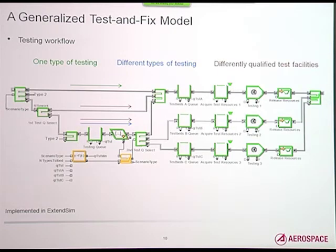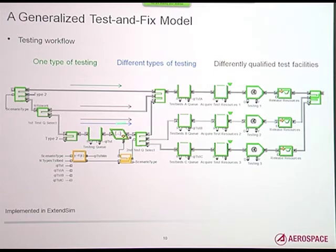This is an excerpt from the model, implemented in a tool called ExtendSim. One type of testing uses the top flow; when we have different types of testing, it flows through and is routed according to the type. Where we have differently qualified test beds, there are two routes, routed according to the test queue that needs to be selected.